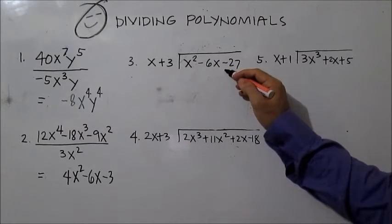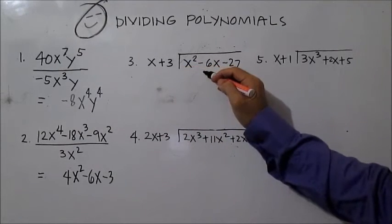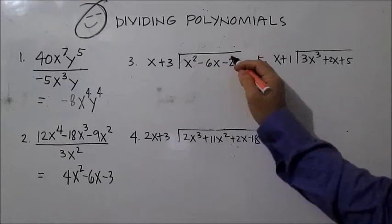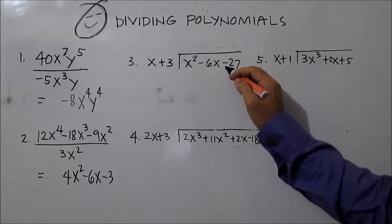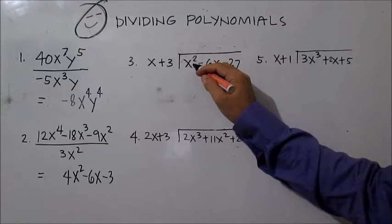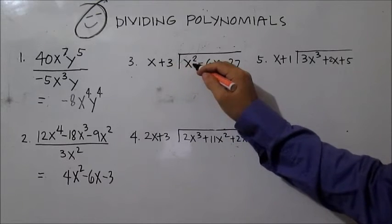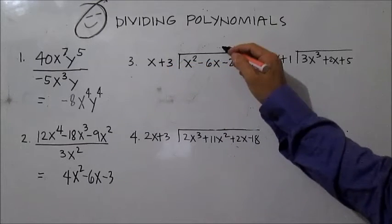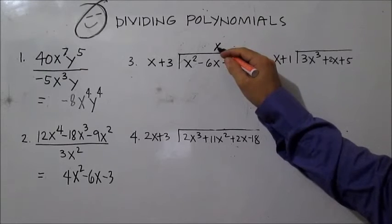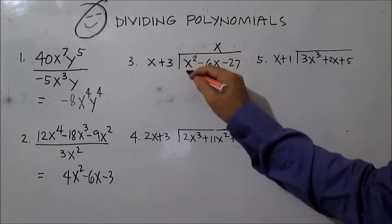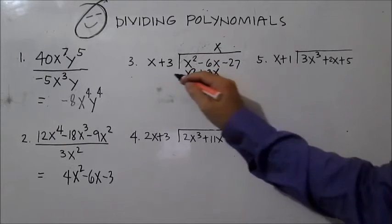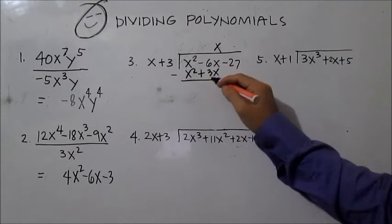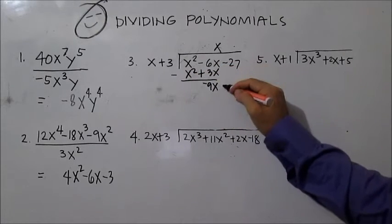For number three, we have a trinomial divided by a binomial. It is wise to write the polynomials in descending order. To divide, just divide the first terms: x squared divided by x is x. Then multiply x by the binomial: x times x is x squared, x times 3 is 3x. Then subtract — you have 0, and negative 6 minus 3x is negative 9x.